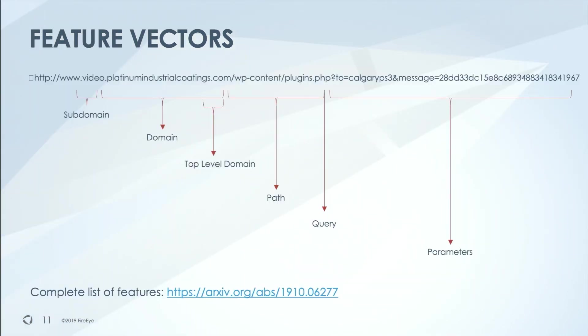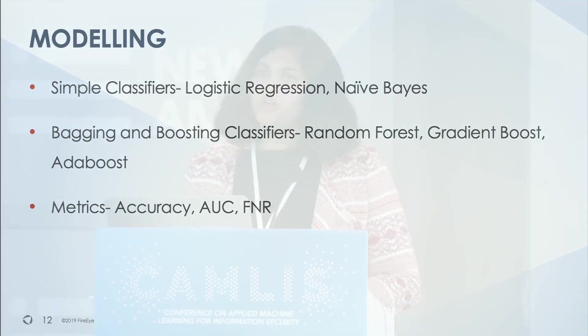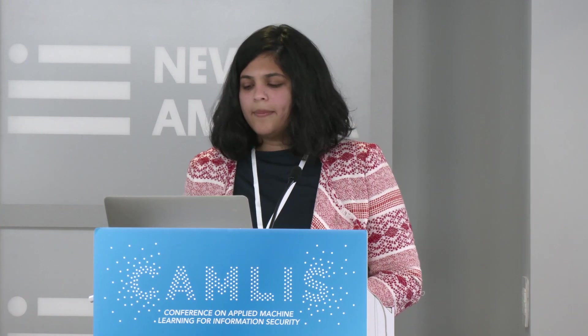A complete list of features is in my arXiv paper on the website if anybody is interested. For the modeling, I looked at simple classifiers like logistic regression and Naive Bayes, and bagging and boosting classifiers like random forest, gradient boost, and AdaBoost. I used metrics like accuracy, AUC, and most importantly false negative rate to compare between the models.